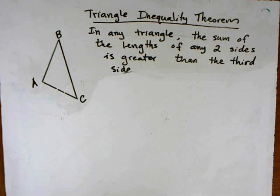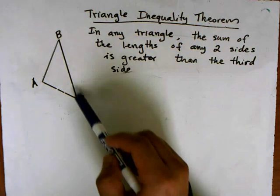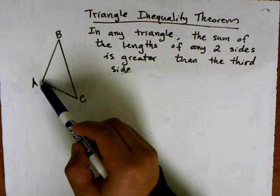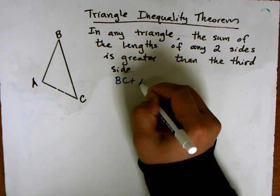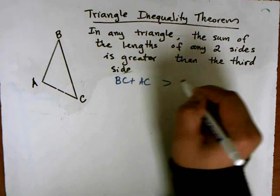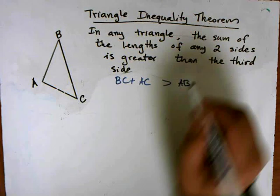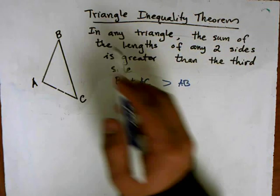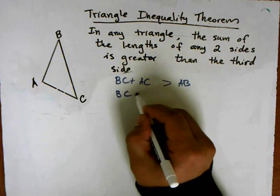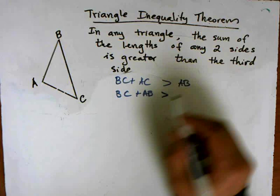So that means in this triangle we can say three different statements. If you take any two sides like BC plus AC, that's going to be bigger than the other side. So we can say that BC plus AC is greater than AB. We can also say that BC plus AB is going to be greater than AC.